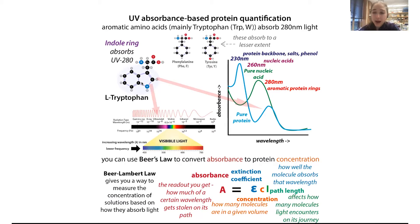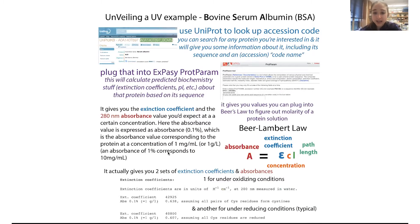For example, if you have a protein with a lot of tryptophan and you see a big peak, you might think you have a ton of protein, but really your protein just had a lot of tryptophan. Or you might see a little peak and think you barely got any protein, when actually your protein doesn't have much tryptophan — so you have a lot more protein than you think. Using Beer's Law, you can determine the exact extinction coefficient — how much your specific protein would absorb — and use that to determine concentration.